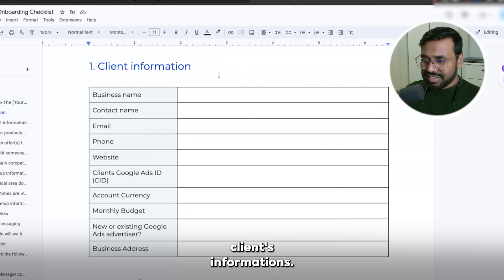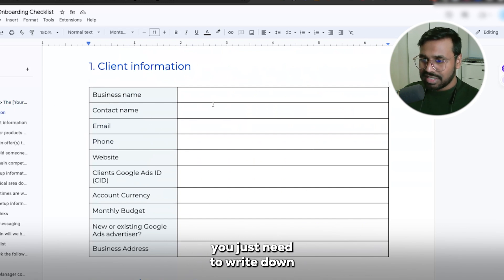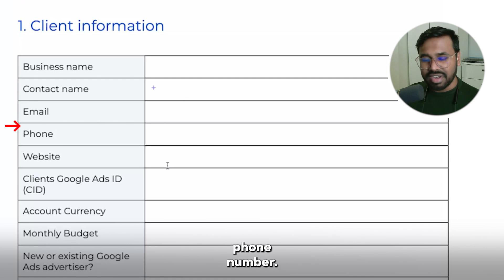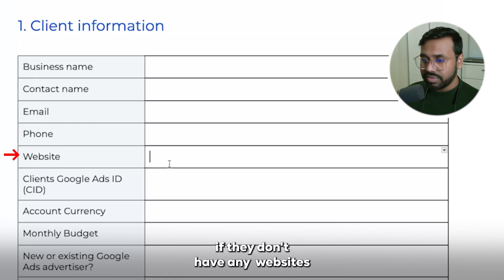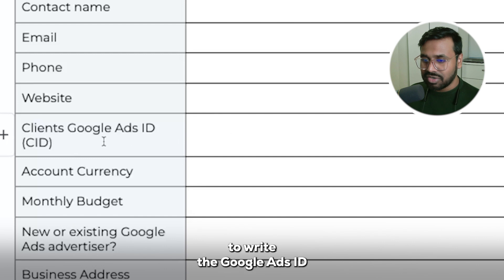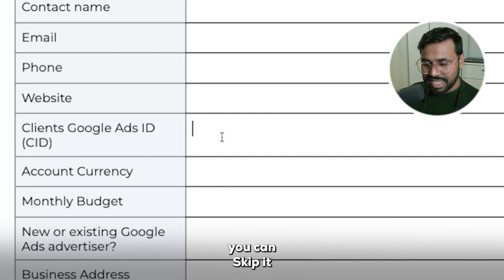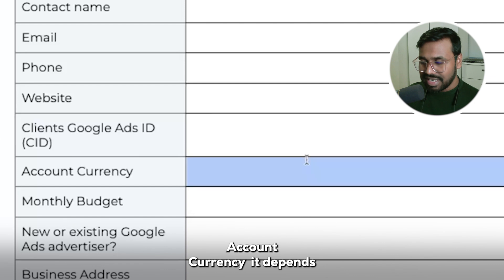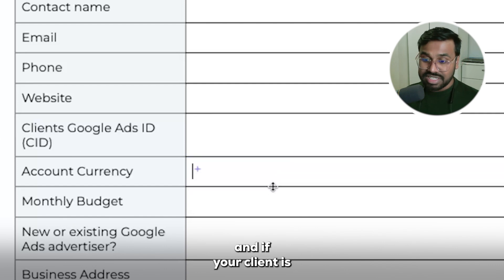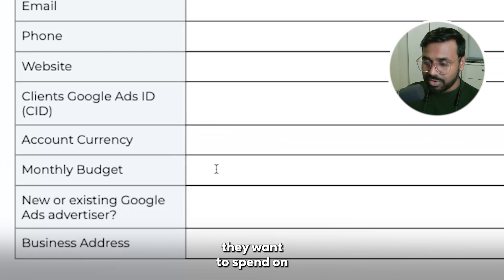This is the first part: client information — I would probably call it basic information. Your client just needs to write down business name, contact name, email, phone number, and website if they have one. If they don't have a website they can skip that part. If your client has an existing Google Ads account, they just need to write their Google Ads ID, or skip it if they don't have one. Account currency depends on the client's location — US dollar for US clients, Australian dollar for Australian clients.